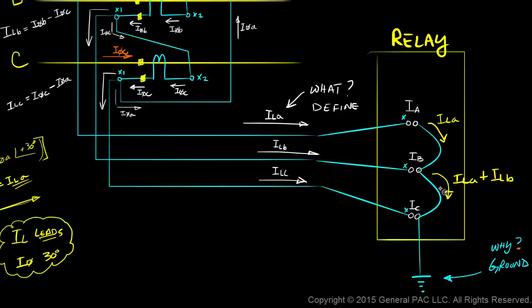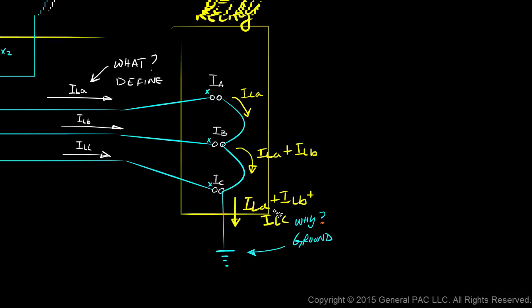Which makes sense, right? Line current b is flowing into the polarity side here. Line current a is flowing into the non-polarity side there. And what's flowing out is the sum of what's flowing in. And lastly, what's flowing to ground is line current a plus line current b plus line current c. Let's move it over here.